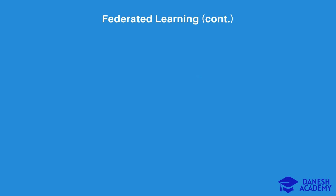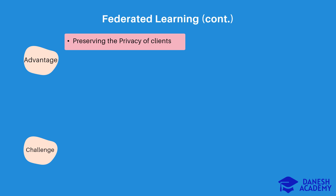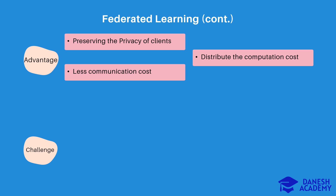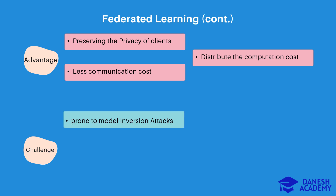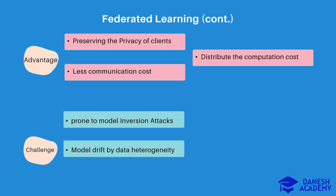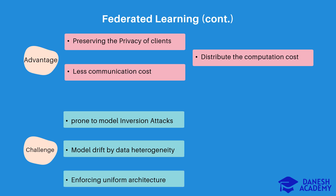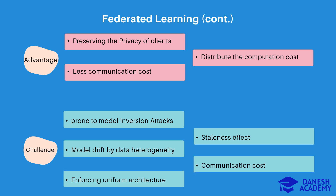In this slide, I'm going to discuss the advantages and challenges of federated learning methods. As the main objective, they preserve the privacy of clients. In the case of small local datasets, they may have less communication costs compared to centralized methods. They also have some big challenges: they are prone to model inversion attacks, and they face model drift issues due to data heterogeneity among local datasets. Furthermore, they enforce a uniform model architecture on all clients. Because of system heterogeneity — in communication, computation, and energy resources among clients — we face stalemate effects in the training process. Communication costs can also be significantly high in scenarios with large local models.